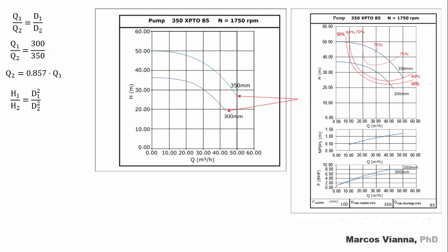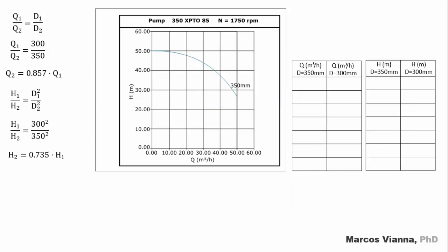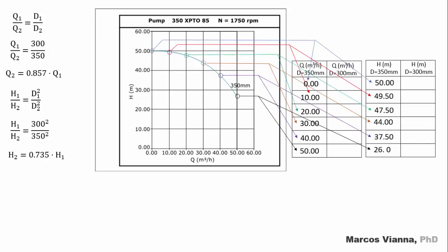Let us do the same with the relationship between head and diameter that we found. It turns to this when we put on numerical values. Now we will construct these tables containing the values of head and flow. There it goes. Flows and heads under places.